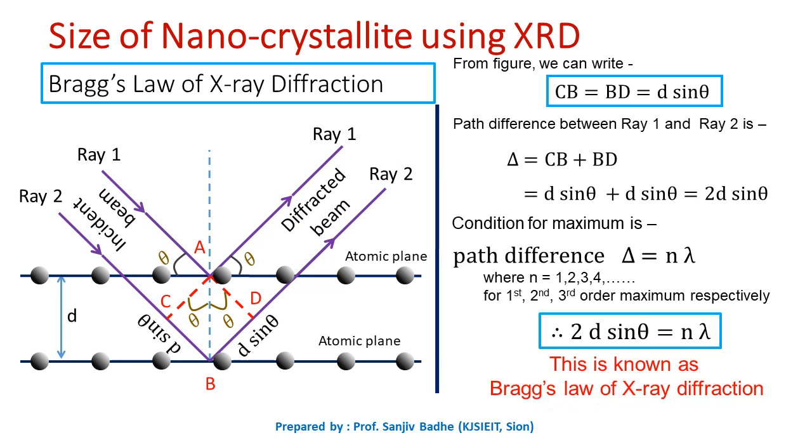So in this case, the path difference is 2d sin theta where d is interplanar spacing. So 2d sin theta is equal to n lambda. This is the condition for maximum, and this condition is known as Bragg's law of X-ray diffraction.